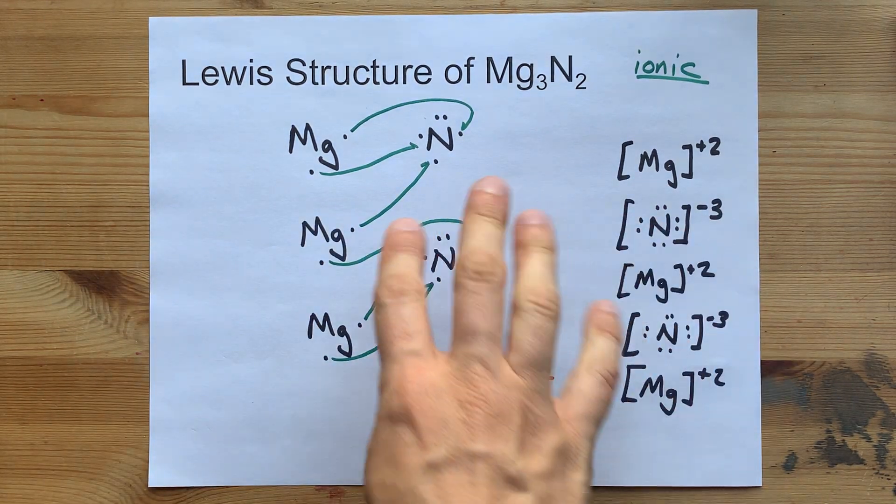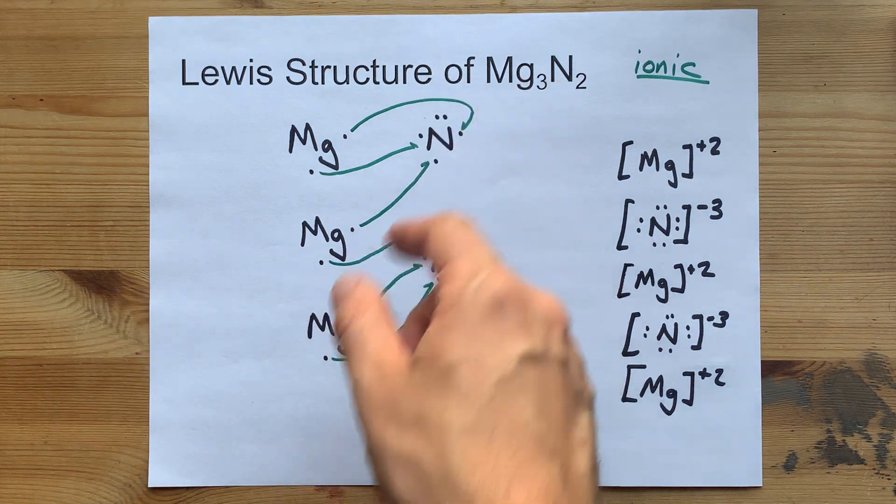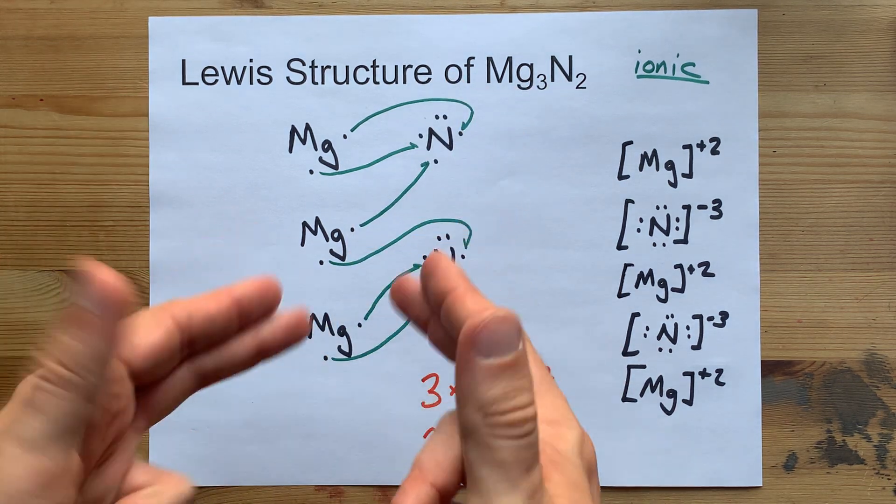That's it. There's your Lewis structure for MgN, an ionic compound. Best of luck.